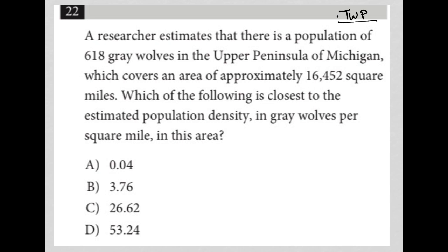The first sentence says a researcher estimates that there is a population of 618 gray wolves — I'll write that down as GW for gray wolves — in the upper peninsula of Michigan, which covers an area of approximately 16,452 square miles. I'll write that down: 16,452 miles squared, same as square miles.